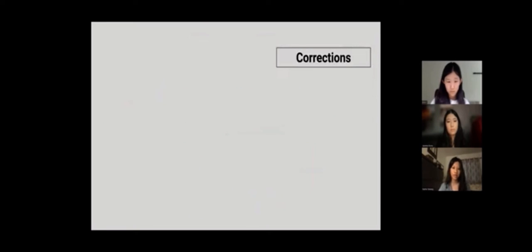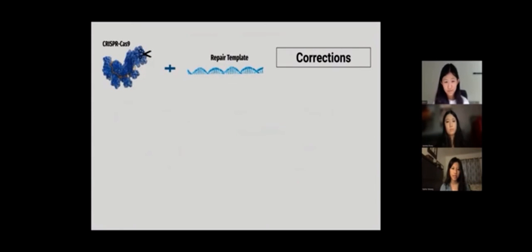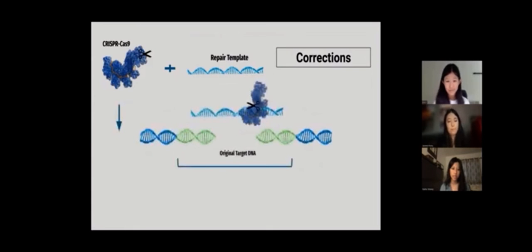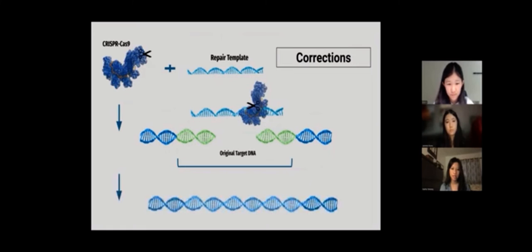And three: Corrections can also be made to the DNA by adding a third component to the Cas9 RNA complex called the repair template. This DNA template is designed with sequences that match the DNA adjacent to the target cut site. Through a process called homology-directed repair, the cell uses the template to repair the break, thereby replacing the faulty DNA sequence or even inserting a new gene sequence.